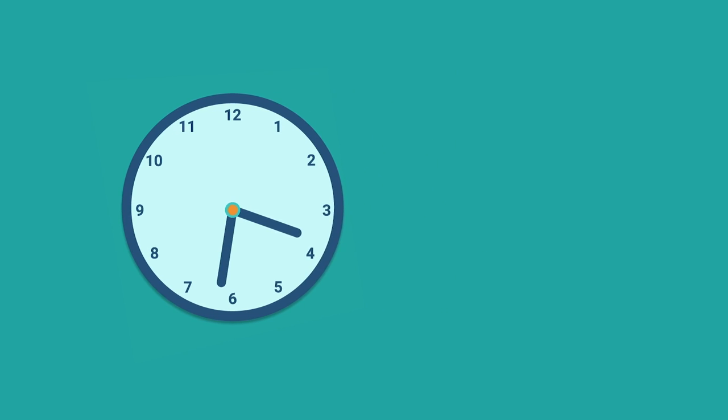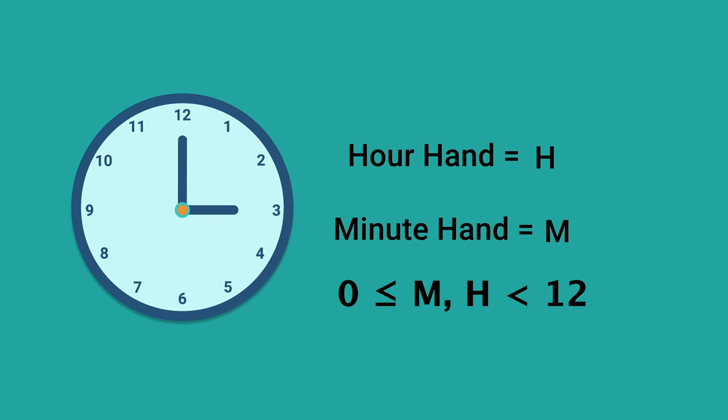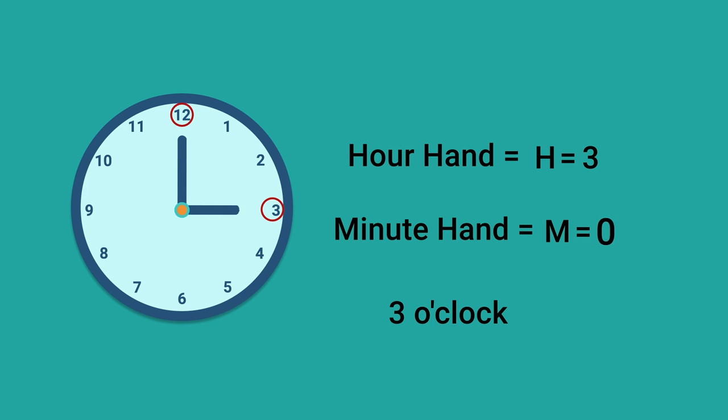To figure this out, I'm going to put back a clock with normal hands, because we're going to represent times by coordinates. Wherever the hour hand is pointing, I'm going to call h, and for the minute hand, I'll call that m. Both of those numbers will assume values between 0 and 12, including 0, since the hands move continuously. If it's 3 o'clock, h would be 3, that's where it's pointing, and m would be 0.